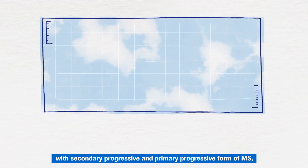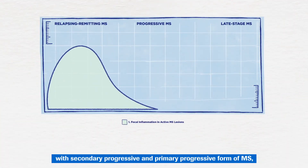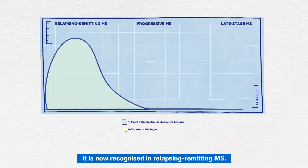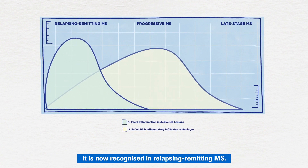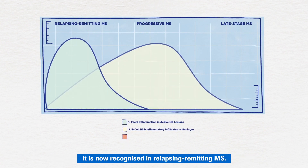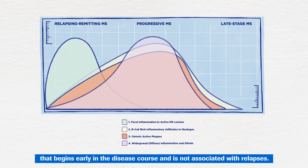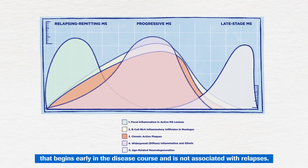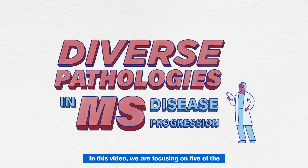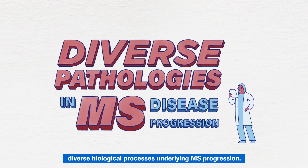Although disease progression used to only be associated with secondary progressive and primary progressive forms of MS, it is now recognised in relapsing-remitting MS. High-efficacy therapies have unmasked disease progression that begins early in the disease course and is not associated with relapses. In this video, we are focusing on five of the diverse biological processes underlying MS progression.